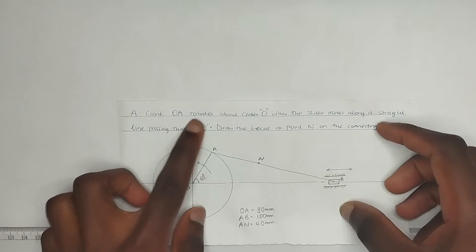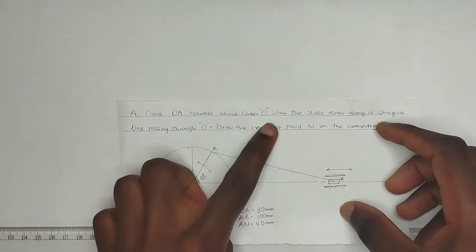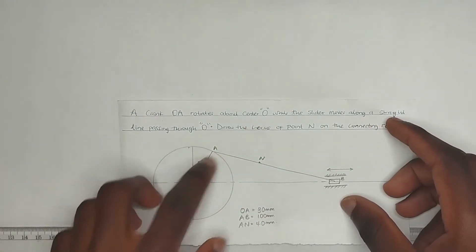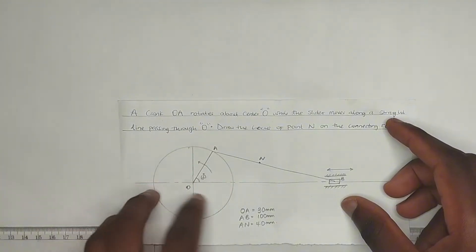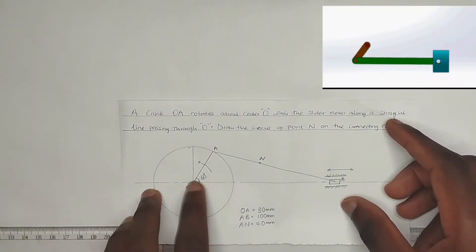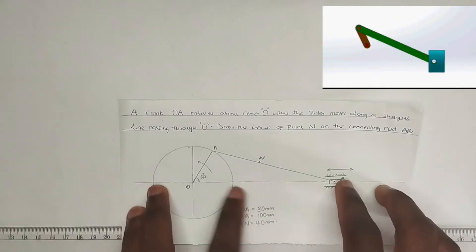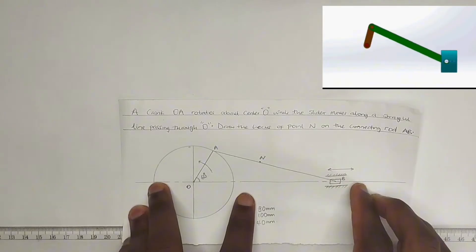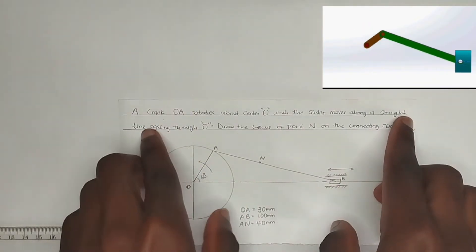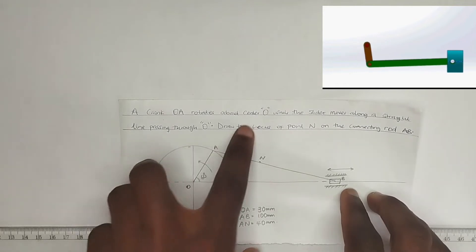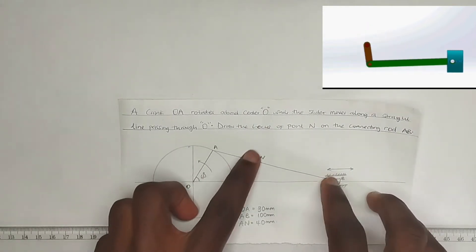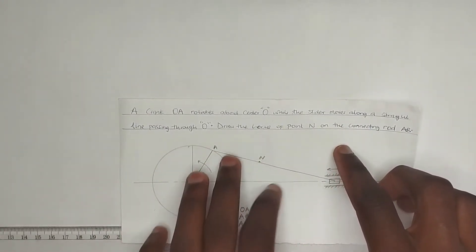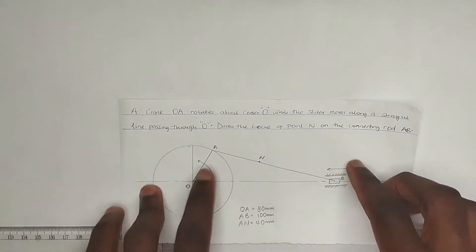We have been given a question which says: a crank OA rotates about center O, while the slider moves along a straight line. The crank is always moving in a rotational motion, while the slider — that is the connecting rod — always moves to and fro in a straight line. The slider moves along a straight line passing through O, and we are asked to draw the locus of point N.